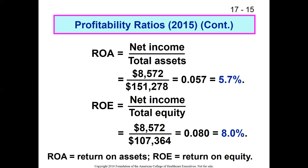ROA and ROE are basically two ways of looking at return on investment. ROA looks at the overall picture of assets purchased to create healthcare. ROE looks at invested capital by owners — or for a not-for-profit, the community. You can increase ROE by increasing your debt ratio, increasing financial leverage, and reducing the relative amount of equity on your balance sheet. Having a high ROE relative to ROA doesn't necessarily mean you're doing a good thing.